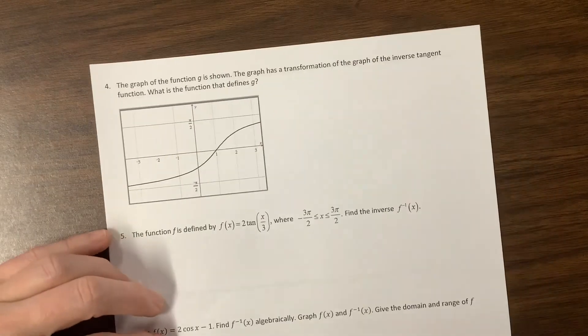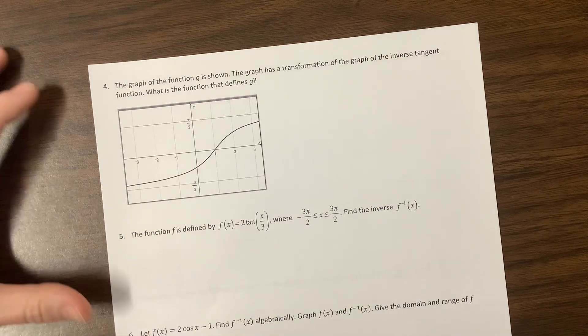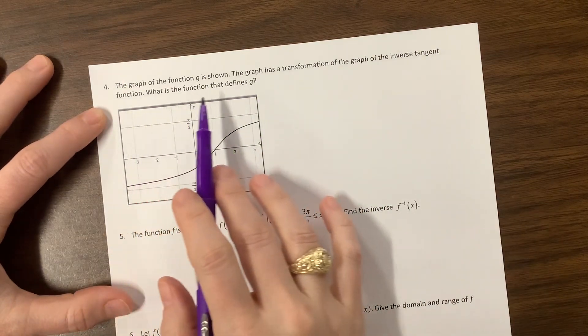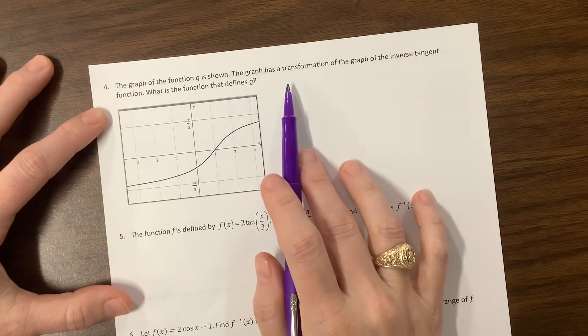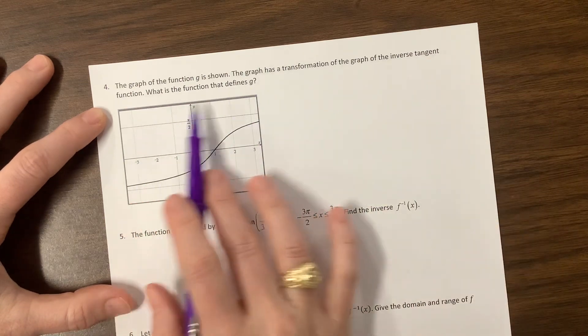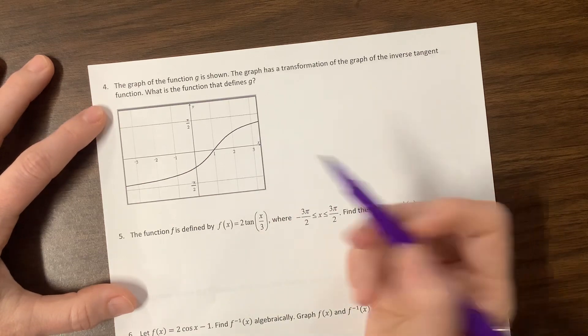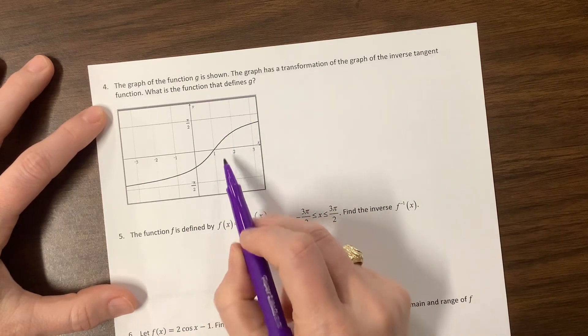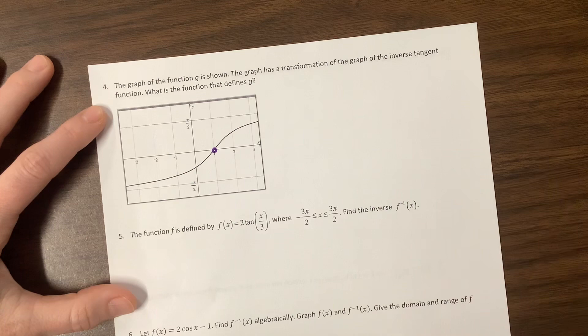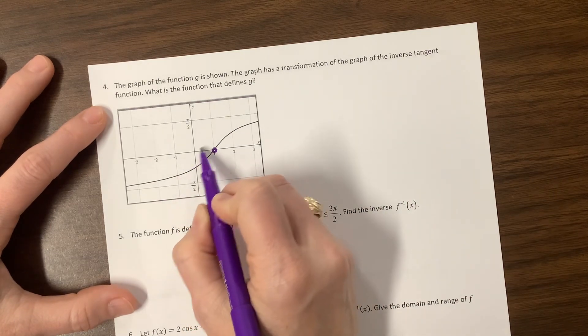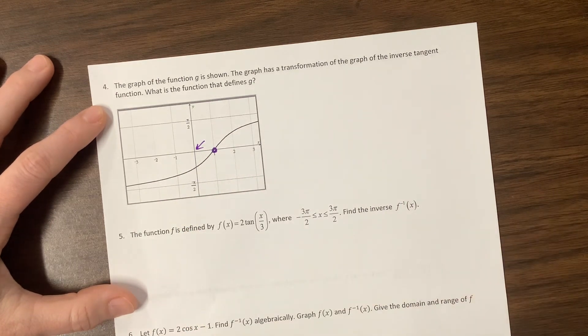Okay, the next one, they're giving us an inverse of tangent. And they're asking us, let's see, the graph has a transformation of the graph of the inverse tangent function. What is the function that defines g? Okay, so here's what I notice. We have the same asymptotes. And we are passing through. This point normally is here, but it's been moved.